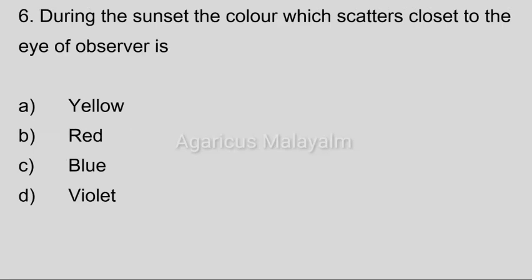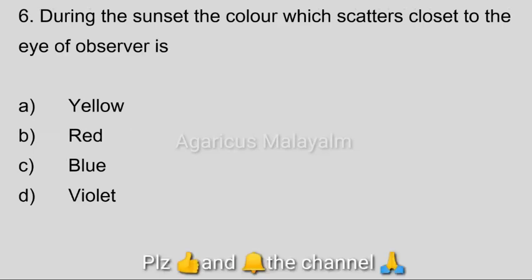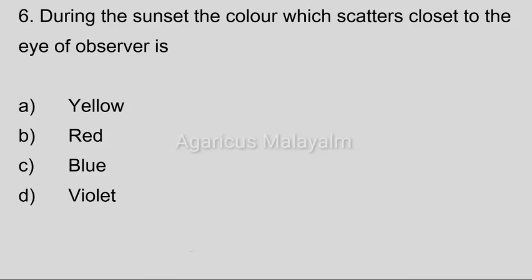Sixth question: During the sunset, the color which scatters close to the eye of the observer is? Answer options: Option A, yellow. Option B, red. Option C, blue. Option D, violet. Correct answer: Option B, red.